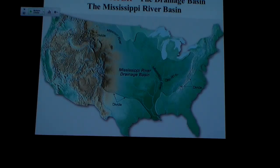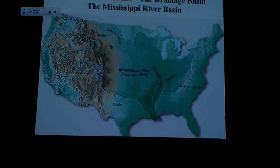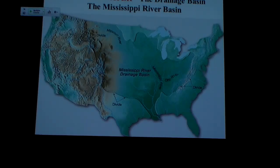Some of the rivers that feed into the Mississippi are major rivers themselves — the Ohio, the Tennessee, the Missouri — big river systems with their own large rivers feeding them. It's just kind of a matter of scale as you go toward the head. The systems become smaller and smaller, but still kind of look the same as the system they're a part of.